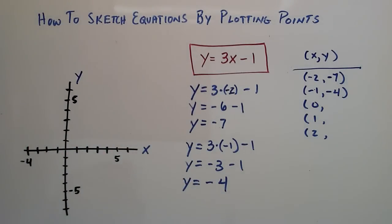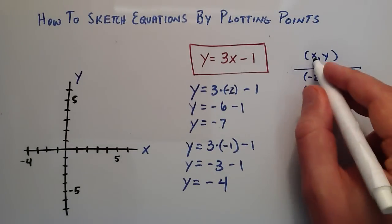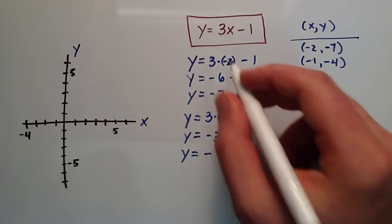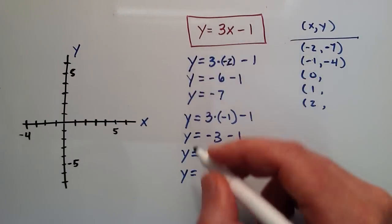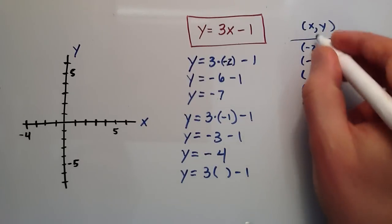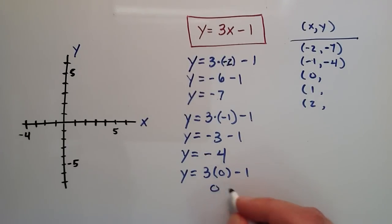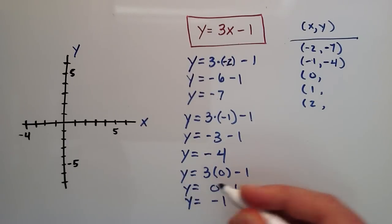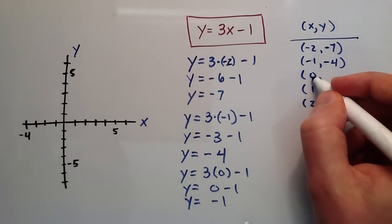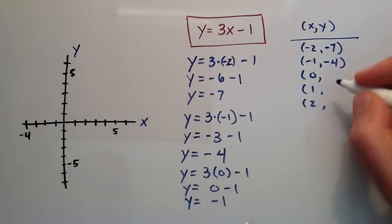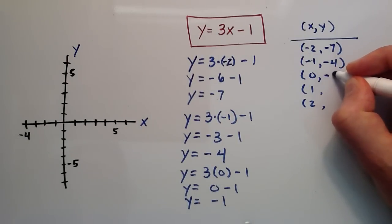The next one we're looking at is when x is equal to 0. y equals 3x minus 1, so 3 times 0 is 0, and then we have minus 1. Nothing take away 1 is negative 1. So when we have an x value of 0, we get a corresponding y value of negative 1.